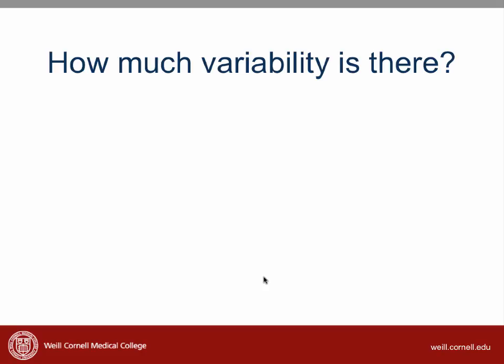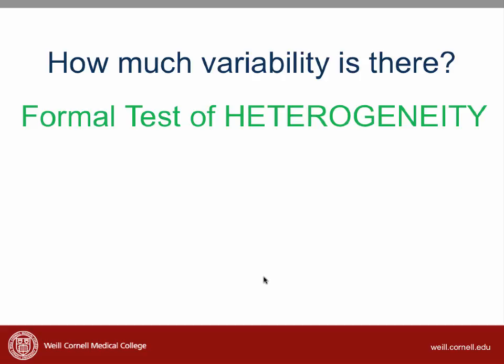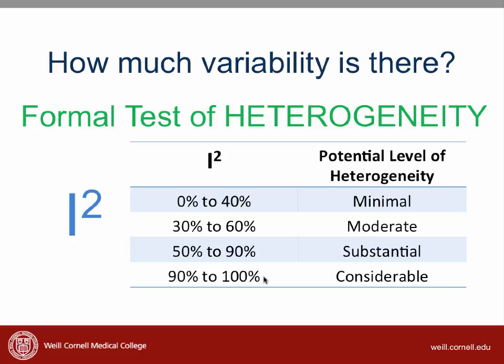There are other, more formal ways to look at variability in studies. These are called formal tests of heterogeneity, which is another term for variability. You do not need to know the statistical background of heterogeneity testing, but you do need to know what the terms are and how to interpret them. One statistic that is often reported is called the I-squared statistic. The lower the I-squared, the less heterogeneity there is, which means there is less variability between the studies. The Cochrane Collaboration has come up with a rough guide for interpreting I-squared: 0 to 40 represents minimal heterogeneity, 30 to 60 is moderate heterogeneity, and 50 and greater represents substantial or considerable heterogeneity.